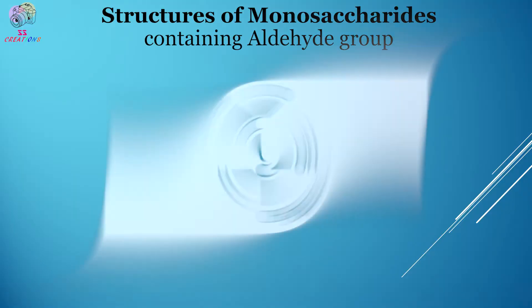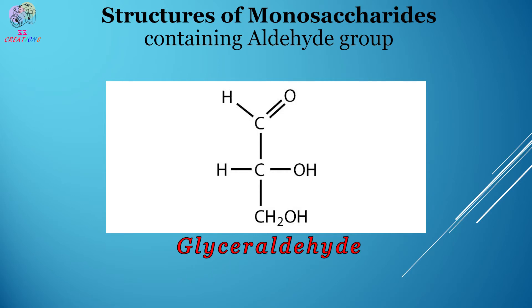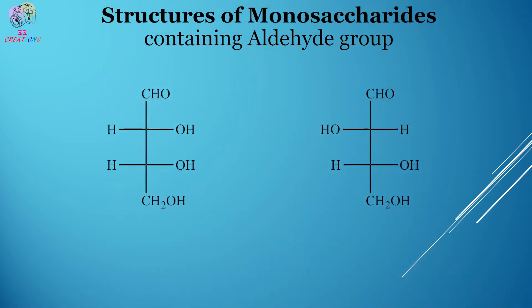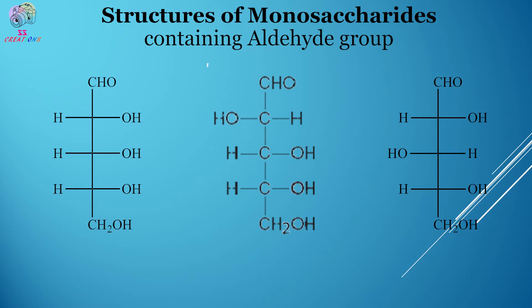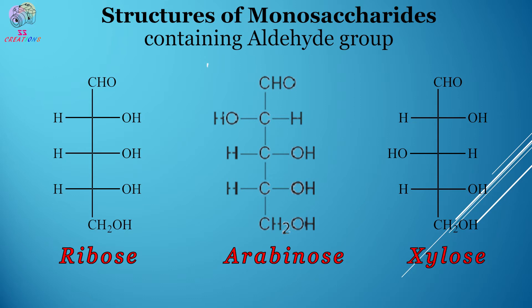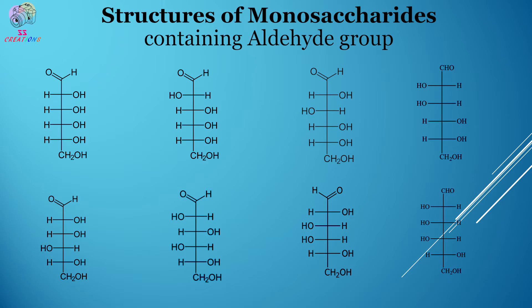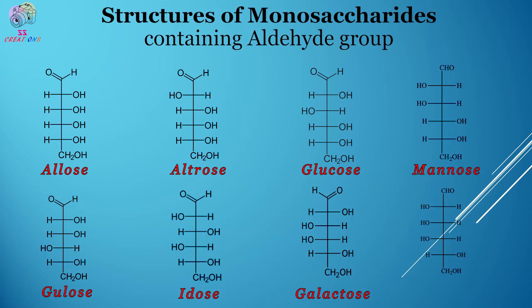Now we are heading towards the structures of some important carbohydrates, starting with monosaccharides containing an aldehyde group. The first structure is glyceraldehyde — it is a triose as it is a three-carbon compound. The next is a tetrose having four carbons; examples are erythrose. Moving on to pentoses having five carbons, examples are ribose, arabinose, and xylose. Hexoses are six-carbon compounds and include allose, altrose, glucose, mannose, gulose, idose, galactose, and talose. Just note the position of hydroxyl groups in all of these examples.